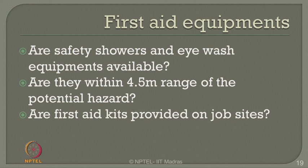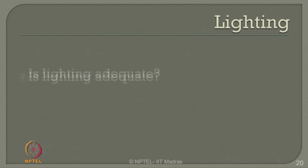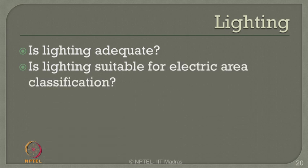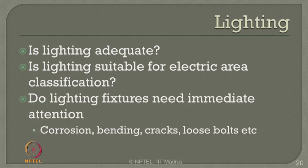Are first aid kits provided at job sites? Check them. Are temperature, pressure, and quality of water available for firefighting satisfactory? Regarding lighting — is lighting adequate in your plant? Is lighting suitable for the electrical area classification? There is a standard procedure to classify the amount of lighting required for electrical areas. Please check whether this is sufficient in your plant and insist on improvement if not. Do lighting fixtures need immediate attention? Sometimes fixtures may be corroded, bent, cracked, or have loose bolts, which will cause hazardous situations by resulting in electrical sparks.